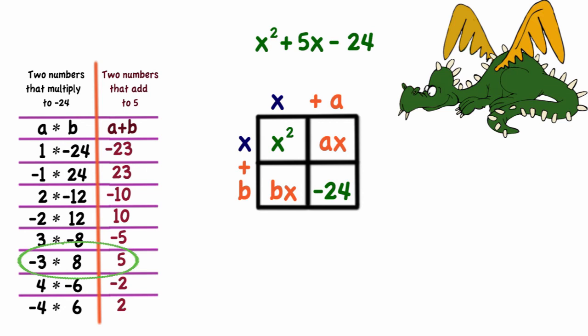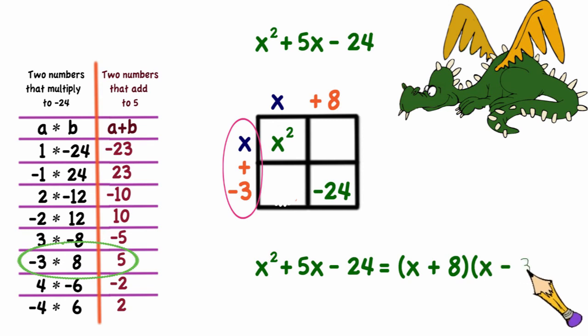When I find the sum that we're looking for, in this case 5, we don't actually need to continue. So now we've found our values for a and b. That means the factors of x² + 5x - 24 are (x + 8) and (x - 3).